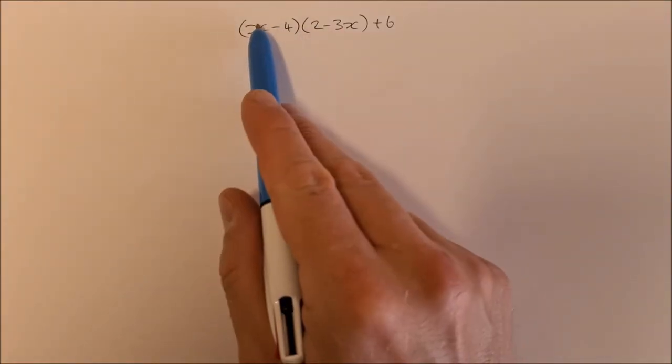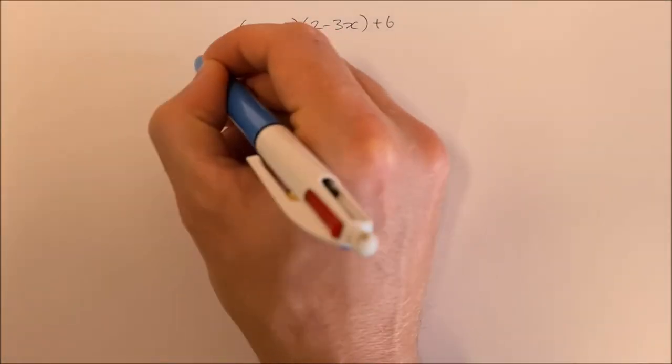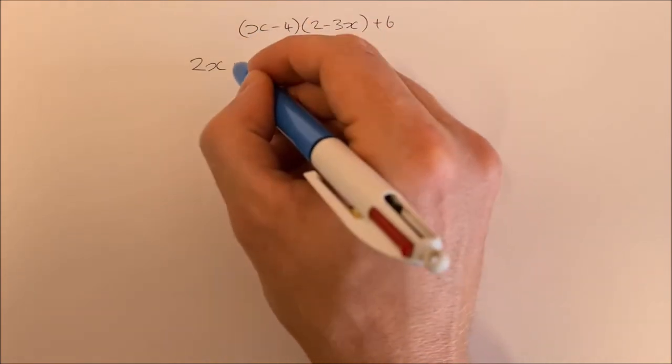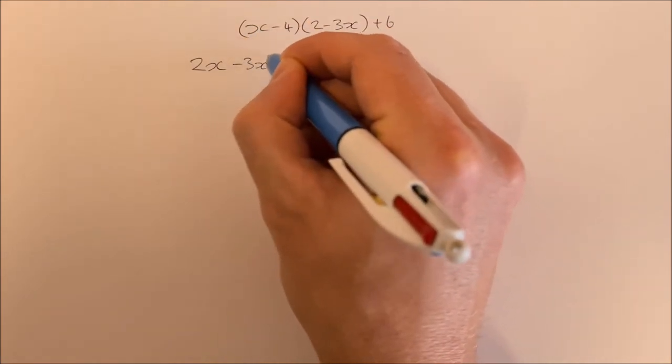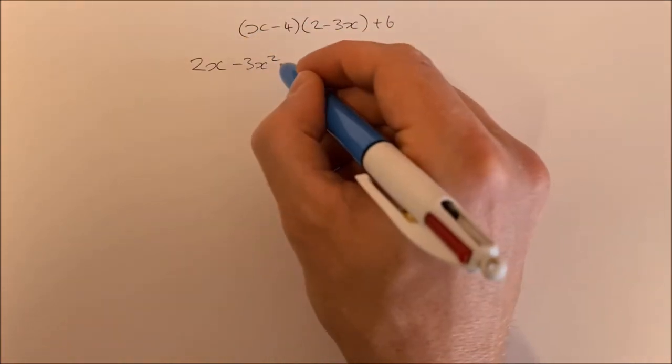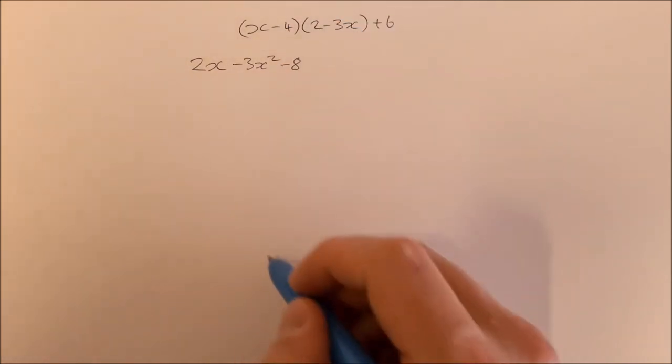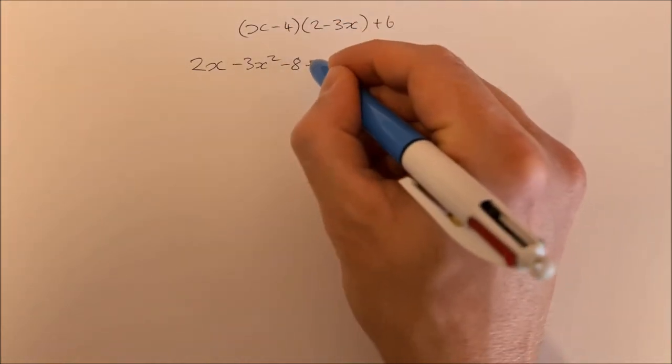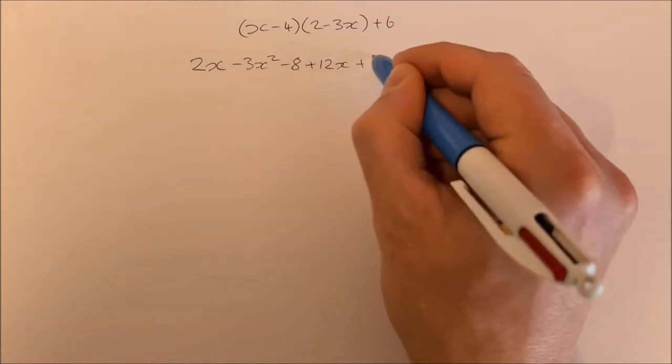So we'll multiply out these brackets. x by 2 is 2x, x by minus 3x is minus 3x squared, minus 4 by 2 is minus 8, minus 4 by minus 3x is plus 12x, and then I have my plus 6.